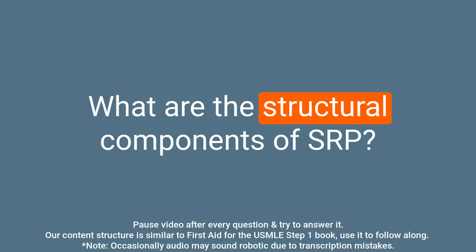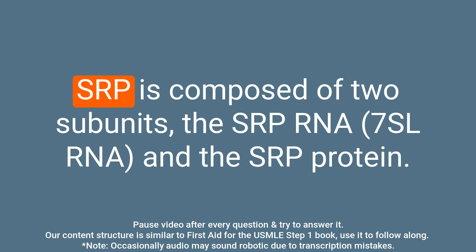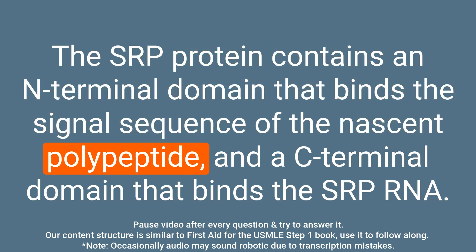Question: What are the structural components of SRP? Answer: SRP is composed of two subunits, the SRP RNA and the SRP protein. The SRP protein contains an N-terminal domain that binds the signal sequence of the nascent polypeptide and a C-terminal domain that binds the SRP RNA.